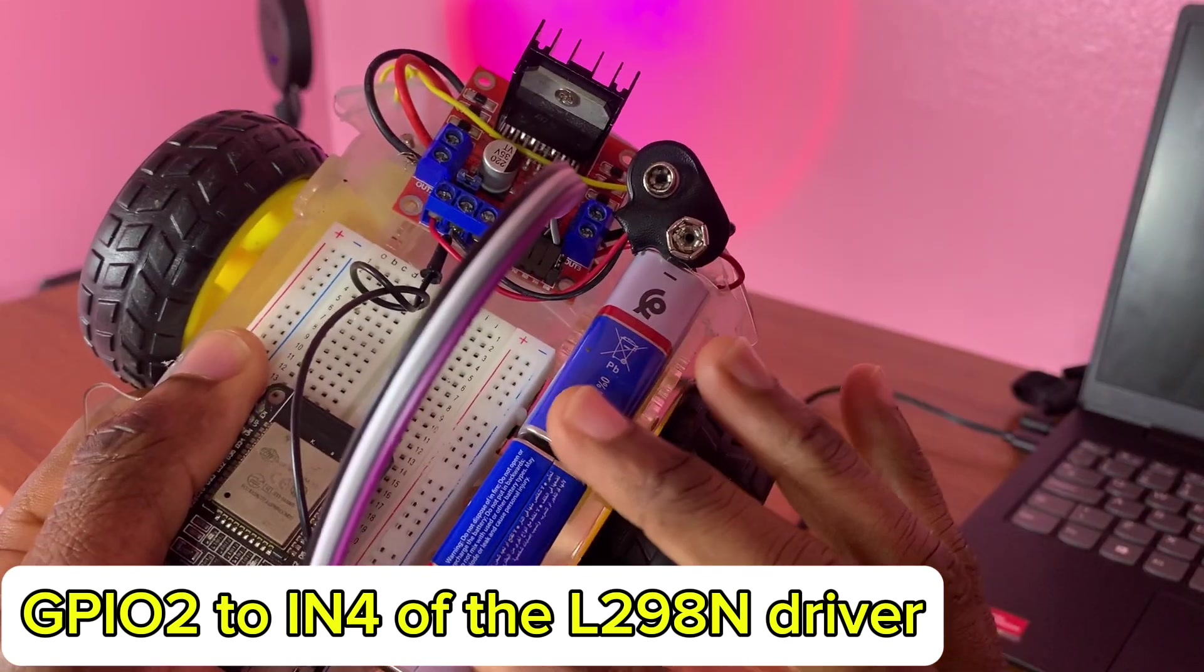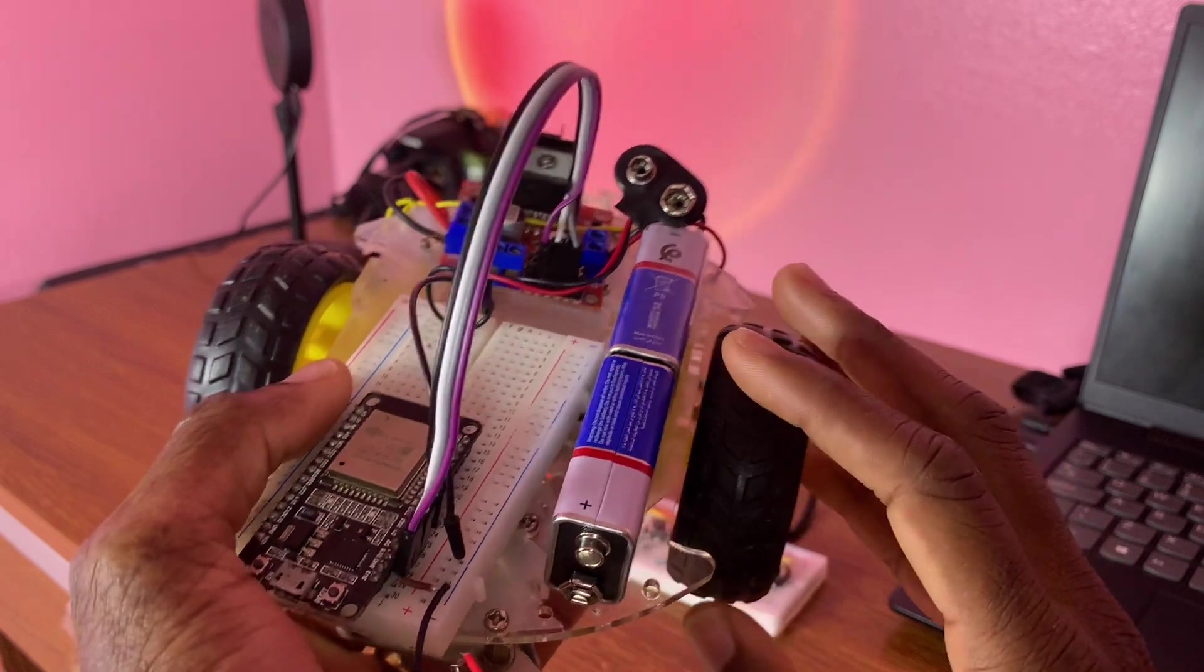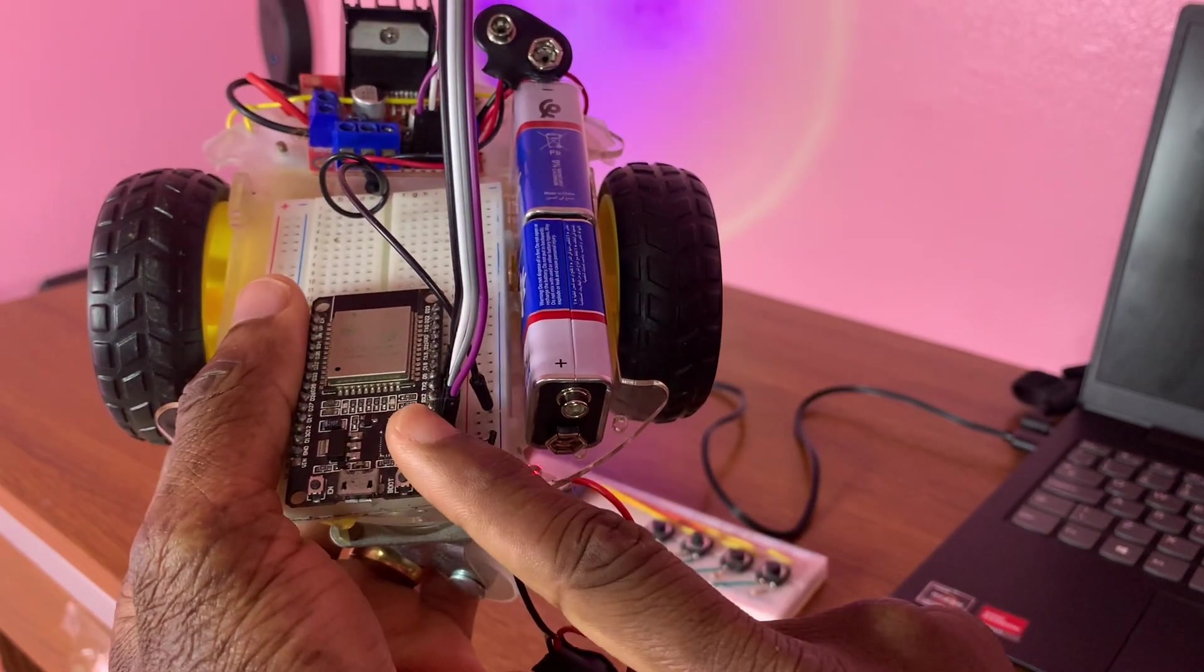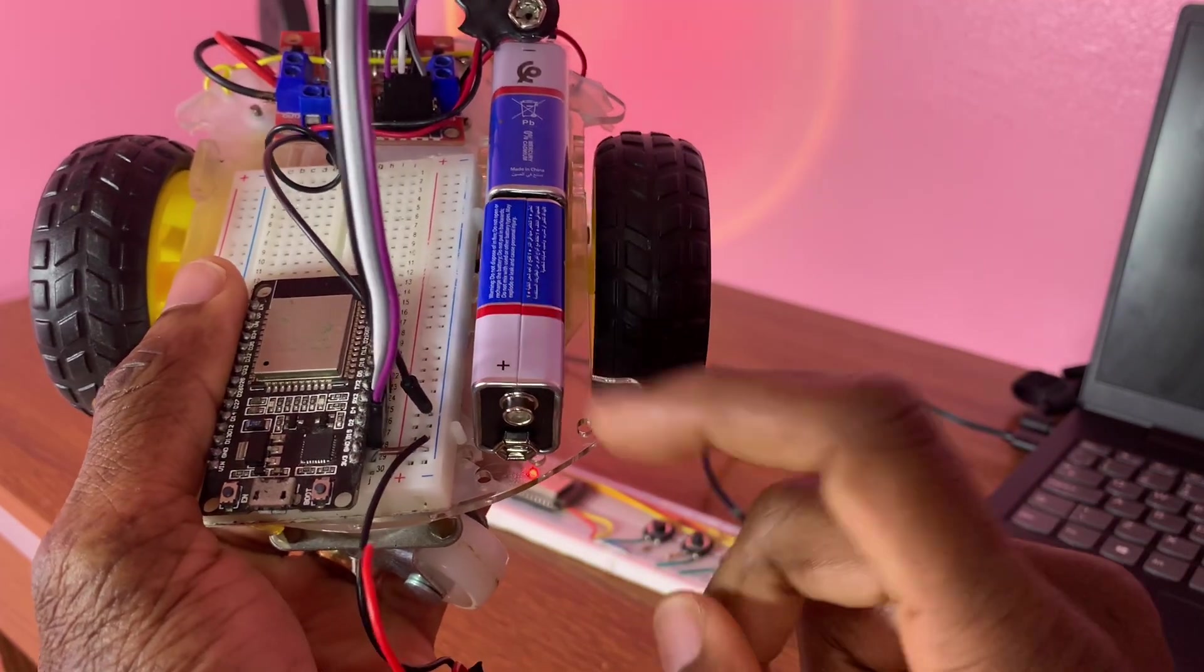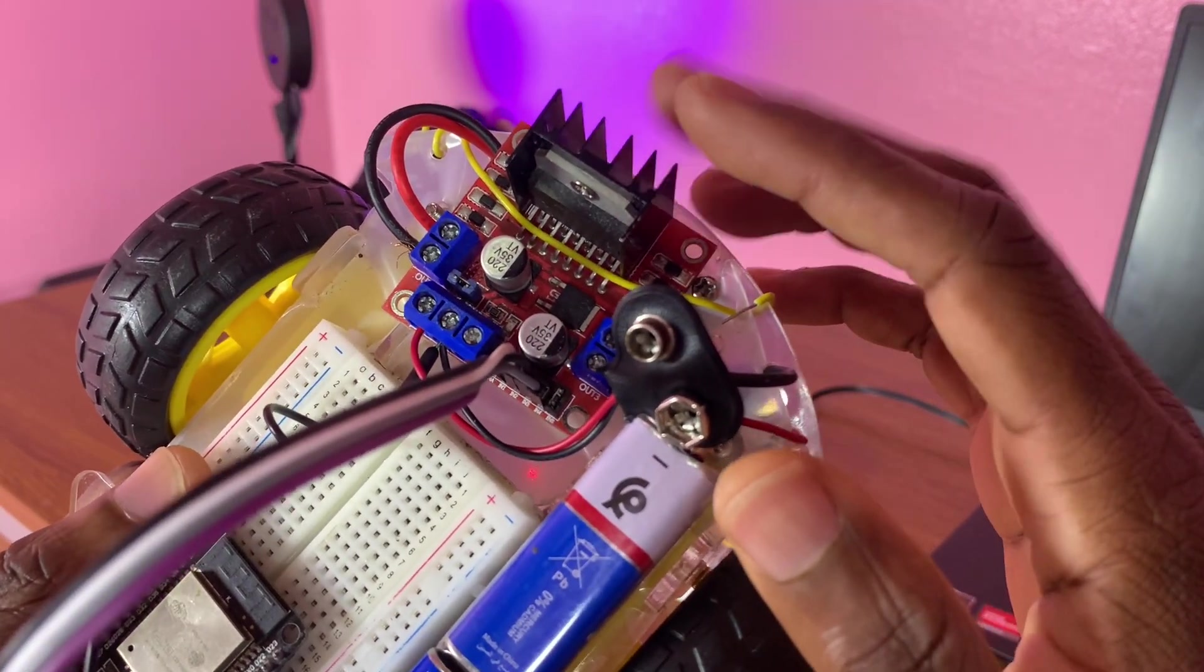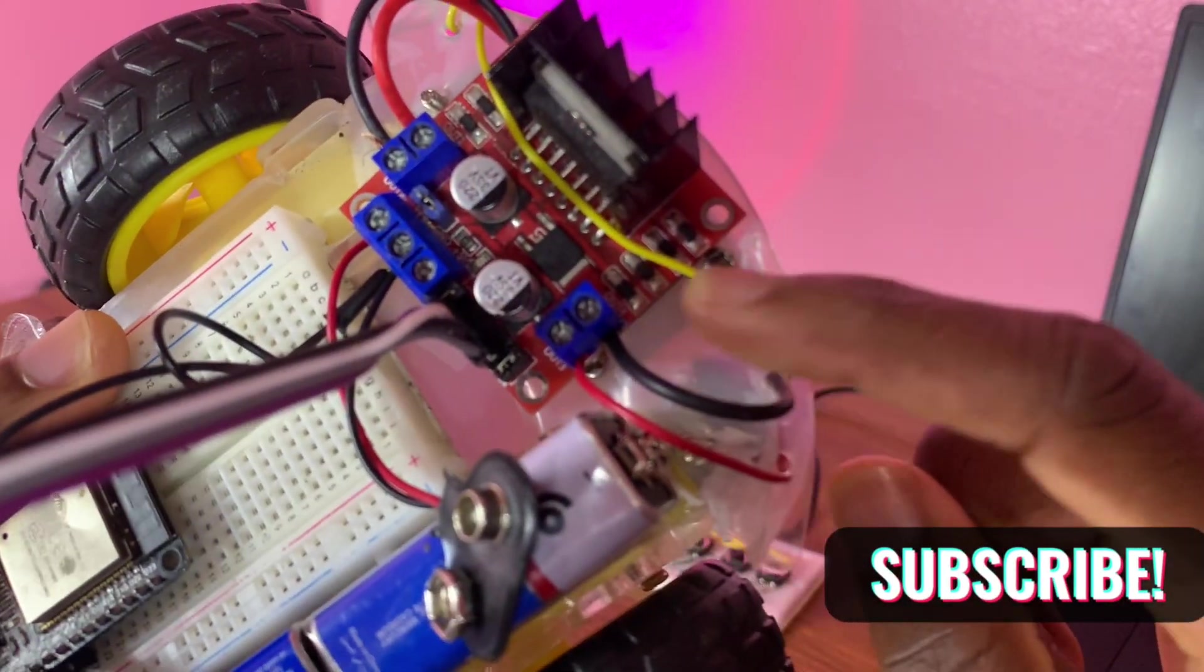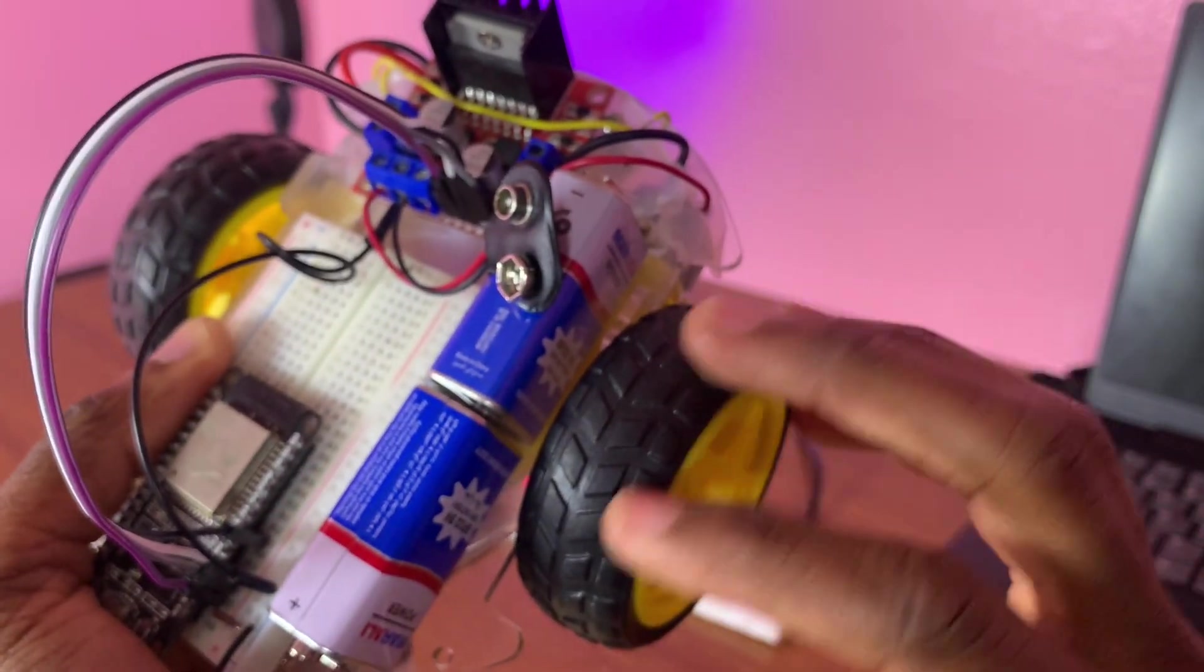So the last one is here with two batteries. The first one is to power the microcontroller, the ESP32, and this one is to power up the driver, here with output 3 and output 4. This is for these...